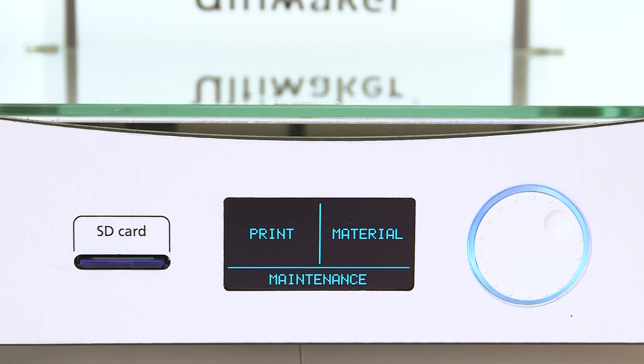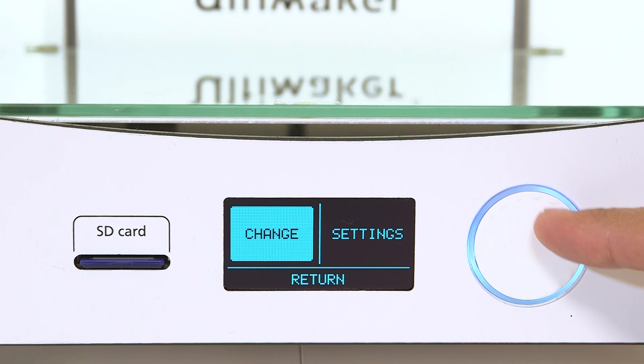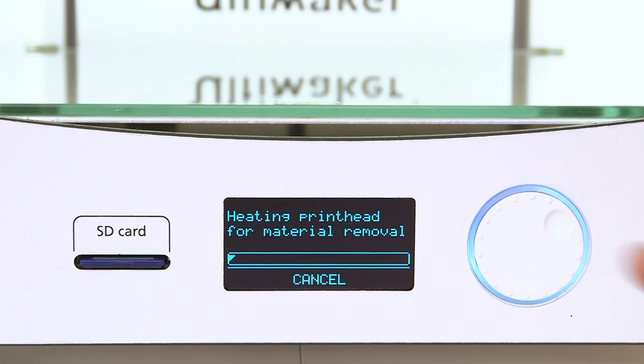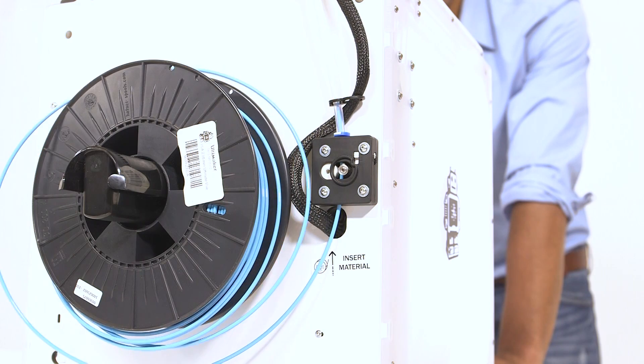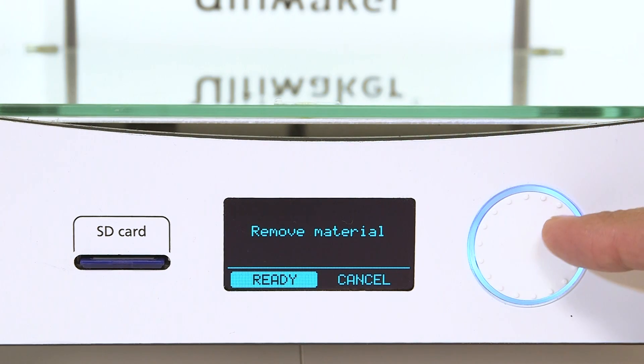First, remove the filament from the print head. Going to the menu, select Material and then select Change. Once the filament has been removed, select Cancel and turn the printer off.